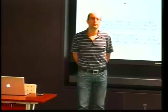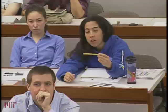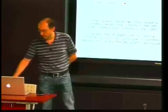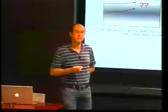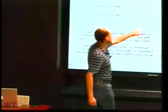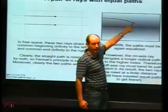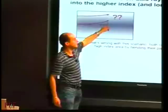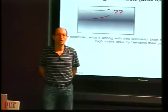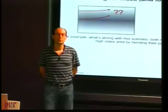Another objection is raised: who says the central ray goes straight? The instructor had silently assumed the central ray goes straight, requiring the off-axis ray to travel further to compensate. But why don't both rays bend outward toward the lower index? The instructor notes this can't happen by symmetry, but then corrects: actually, it's not a question of symmetry.